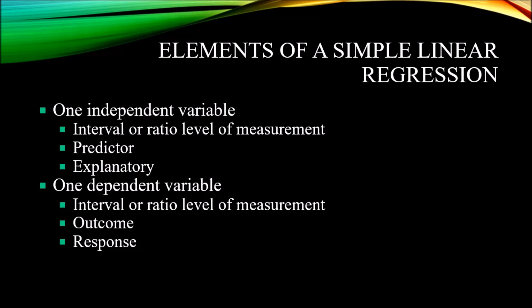This independent variable is also known as a predictor variable or an explanatory variable. For linear regression, we also have one dependent variable. And again, measured at the continuous level of measurement. And the term outcome variable and the term response variable are used as well to refer to the dependent variable.